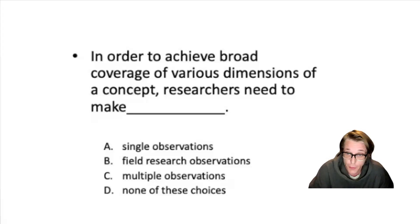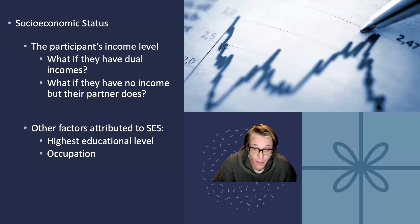All right. Hopefully you took time to pause and we'll continue. So the correct answer here would be C, multiple observations. And this is because when we create our operational definitions to measure, we want to cover various dimensions of the concepts so that we can get a fuller understanding of the complexities of the concepts.